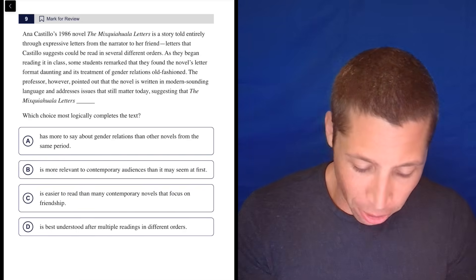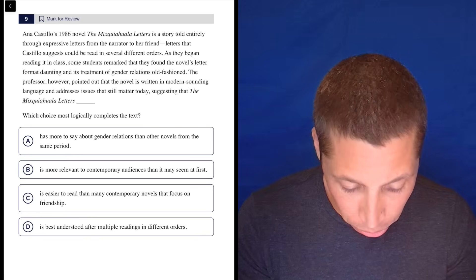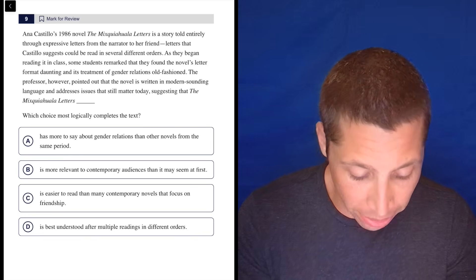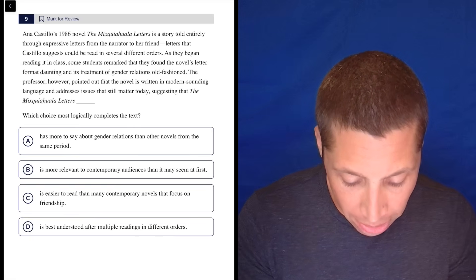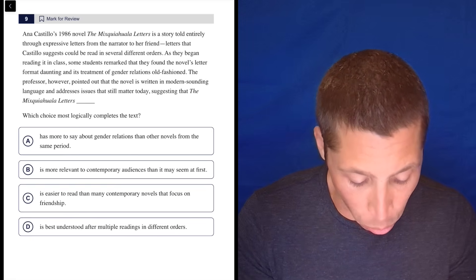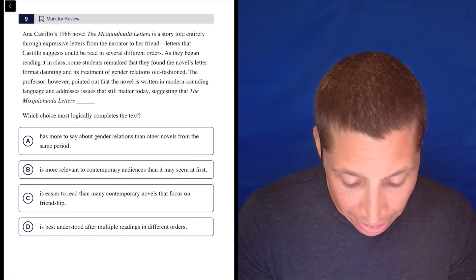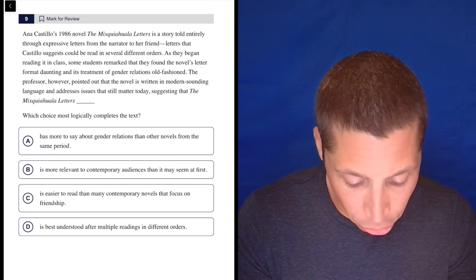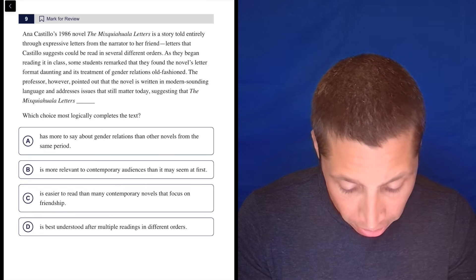Anna Castillo's 1988 novel, The Mopquimaquila Letters, is a story told entirely through expressive letters from the narrator to her friend—letters that Castillo suggests could be read in several different orders. As they began reading it in class, some students remarked that they found the novel's letter format daunting and its treatment of gender relations old-fashioned. So that sounds bad.